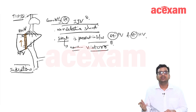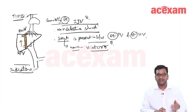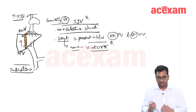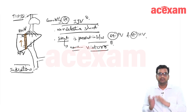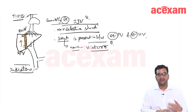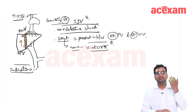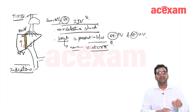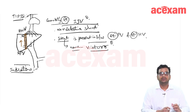TIPS also has a role in hepatorenal syndrome. As for contraindications — the whole portal blood bypasses the liver and reaches the heart and lungs through the hepatic venous system, then IVC, then heart, then lungs. So in cases of right-sided heart failure or pulmonary hypertension, we should avoid doing TIPS. In cases of hepatopulmonary syndrome also, we should avoid TIPS.